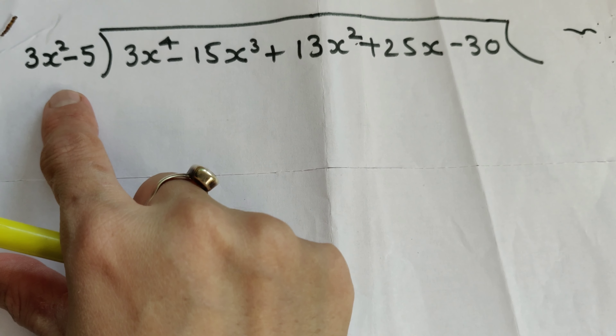Now we copy the remaining line: minus 15x³ plus 18x² plus 25x minus 30. Same process again — we take the first term minus 15x³ and divide by the first term of the divisor 3x². The 15 divided by 3 gives 5, and 3 minus 2 gives power 1, so we get minus 5x. We write minus 5x in the quotient.